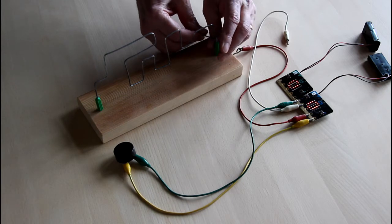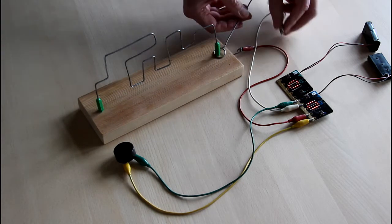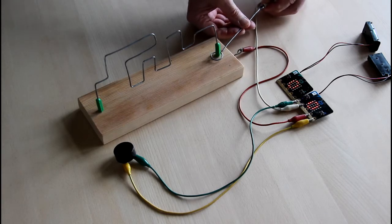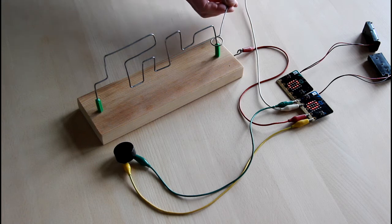This instrument is called a buzz wire, and it gives a sound each time one touches the wire with a metal eye. At the same time, the microbit counts the number of touches.